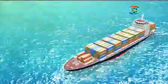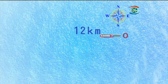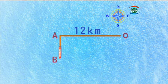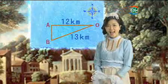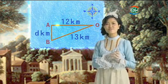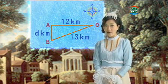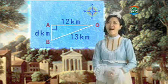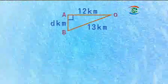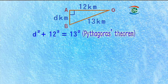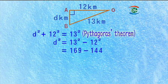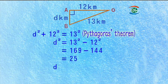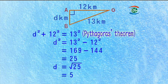We may also use Pythagoras theorem to determine the location and position of something. A ship starting from point O sailed 12 kilometers due west to point A, and then due south to point B. If point B was 13 kilometers from the starting point, how far did the ship sail due south? Let D kilometers be the distance sailed due south. Since angle OAB is 90°, by Pythagoras theorem: D² + 12² = 13², so D² = 169 − 144 = 25, and D = 5. The ship sailed 5 kilometers due south.